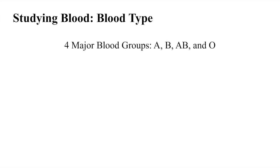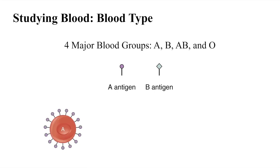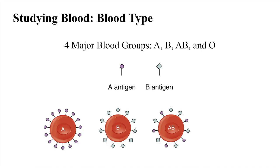Each year, around 4.5 million lives are saved by blood transfusions. There are very specific ways in which blood types must be matched for a safe transfusion — the right blood transfusion can mean the difference between life and death. There are four major blood groups: A, B, AB, and O. These major blood groups are determined by two antigens, A and B, and whether or not they are present on the surface of the red blood cells. If you have only A antigens on your red blood cells, you have type A blood. If you have only B antigens, you have type B blood. If both A and B antigens are present, you have type AB blood. If you don't have any antigens on your red blood cells, you have type O blood.